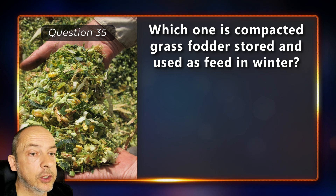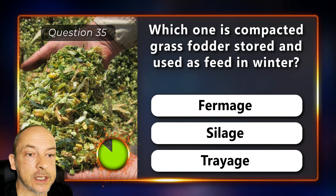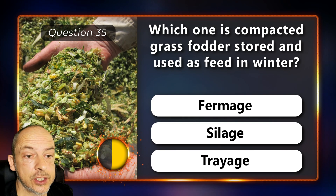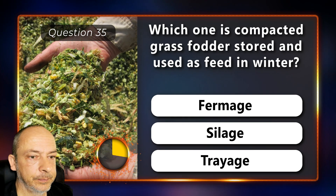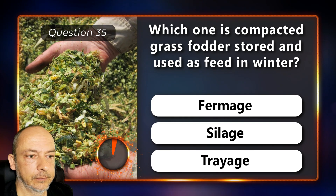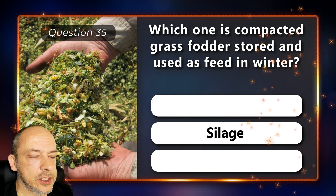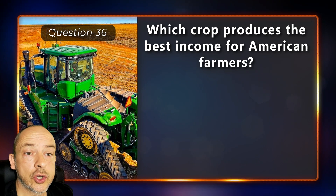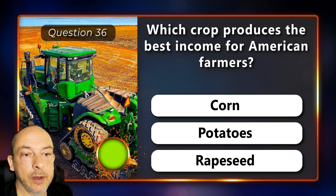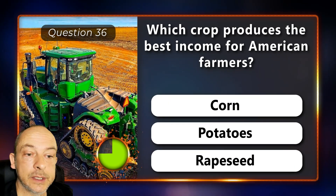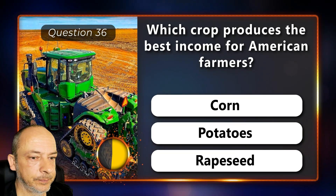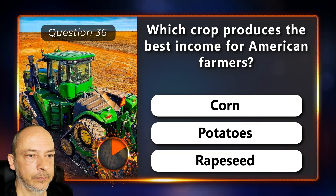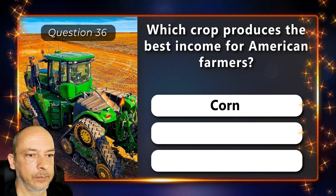Which one is compacted grass fodder stored and used as feed in winter — firmage, silage, or treyage? Silage. Which crop produces the best income for American farmers — is it corn, potatoes, or rapeseed? It's corn.